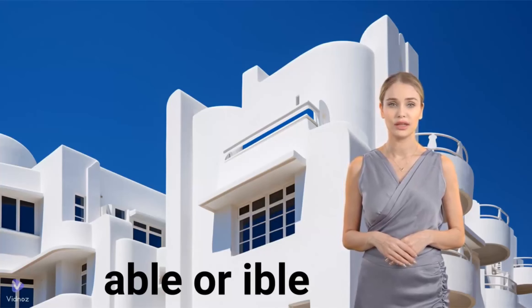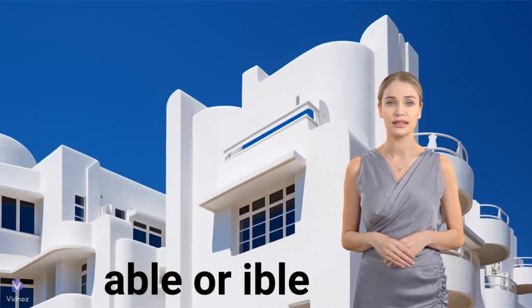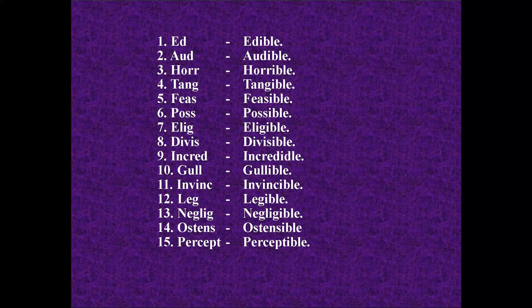Use -IBLE when the root word is not a complete word. Examples: 1. Ed → edible. 2. Aud → audible. 3. Hor → horrible. 4. Tang → tangible. 5. Feas → feasible. 6. Pos → possible.